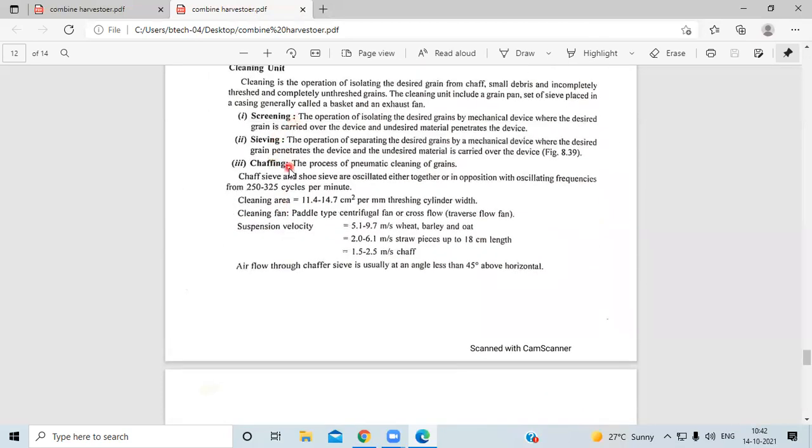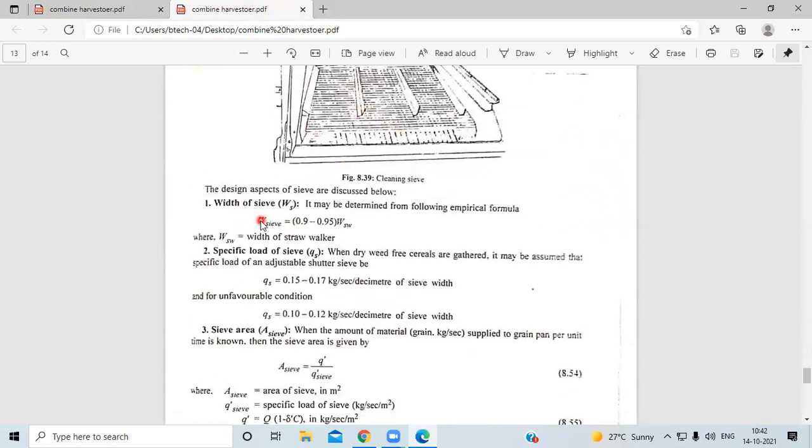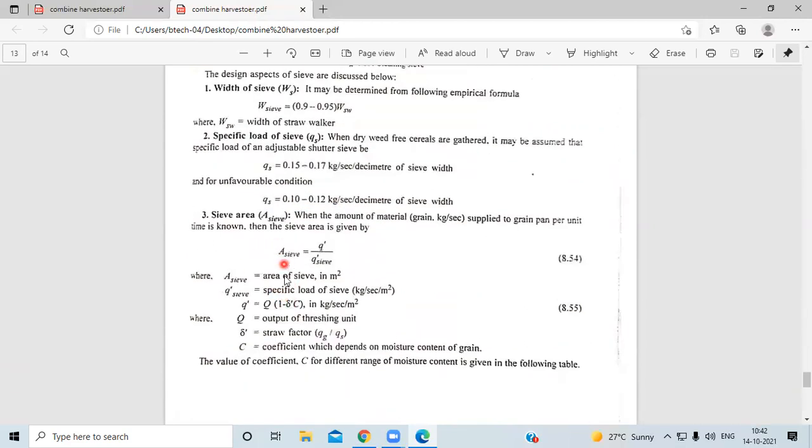Next, the cleaning unit includes screening, sieving, and chaffing. This is the width of the chaffer. WC equals 0.9 to 0.92 times WSV. Specific load on the sieve Q dash equals 0.5 to 0.78 kg per square meter. Area equals Q dash divided by Q dash CO.